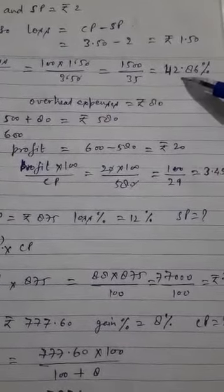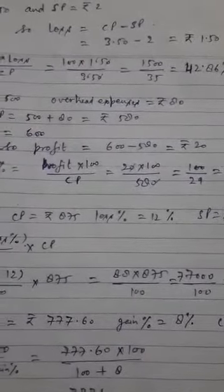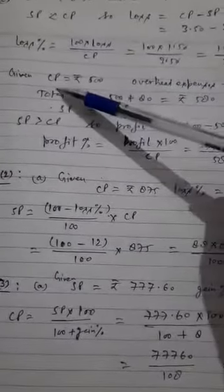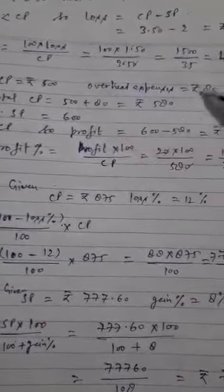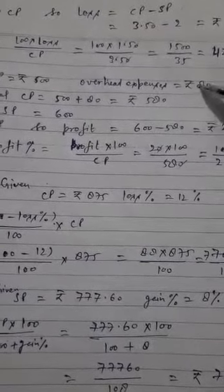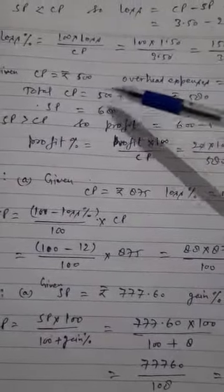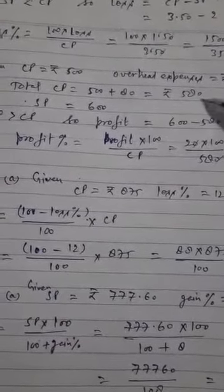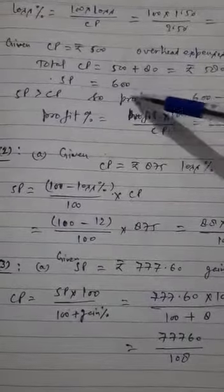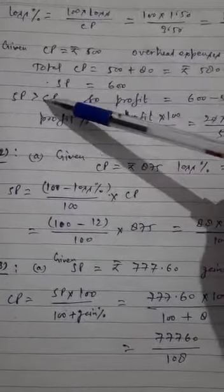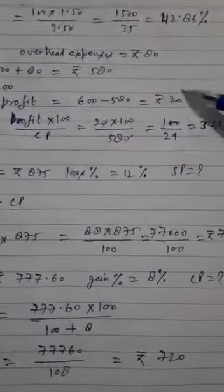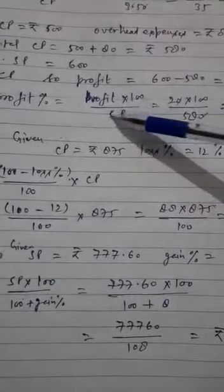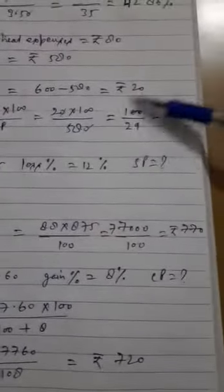Now part G: CP is given and overhead expenses - CP ke saath jo extra expense hue hain woh 80 rupees hain. Total CP kitna ho gaya: 500 plus 80 equals 580 rupees. And SP is given 600. So here SP is greater than CP, it means profit. Profit rupees 20. Now profit percent or gain percent: profit into 100 upon CP, and we will get 3.45 percent.